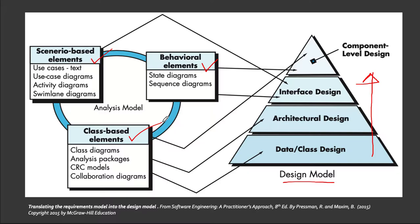Each class corresponds to the data object that will store the values of the class attributes persistently. In many software applications, the architecture of the data will have a profound influence on the architecture of the software that must process it. The relational model influences the use of a relational architecture, and classes presuppose an object-oriented architecture.